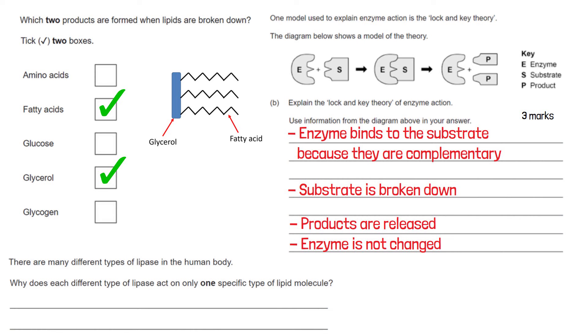The last question on this page says why does each different type of lipase act on only one specific type of lipid molecule. So lipase is the enzyme that breaks down lipids. And this is because lipase has an active site that needs to have a complementary shape to the substrate or in this instance one specific type of lipid molecule.